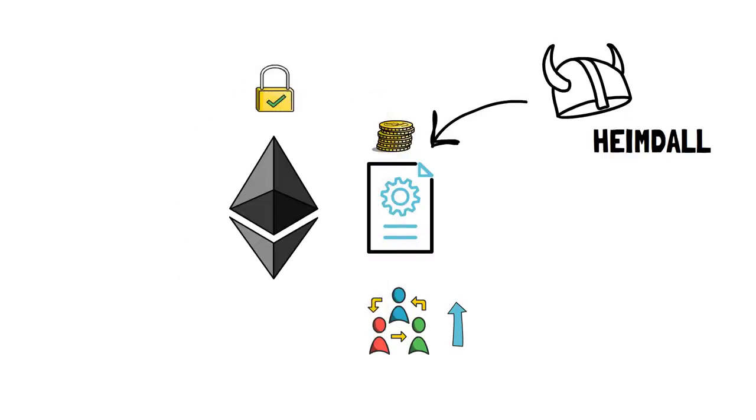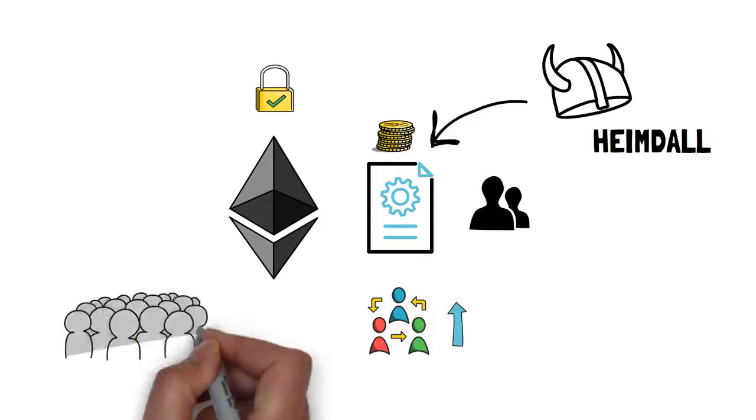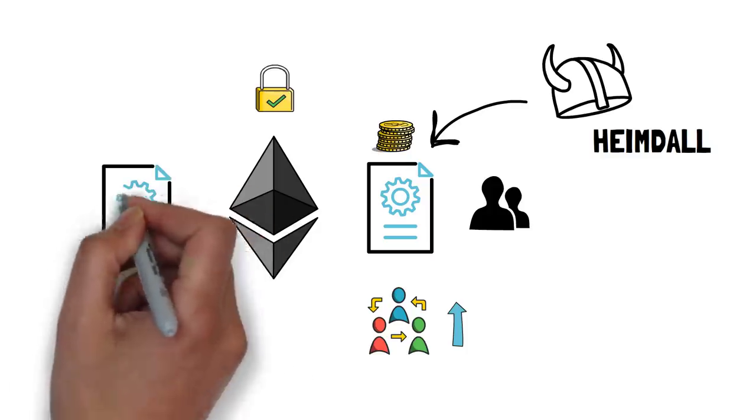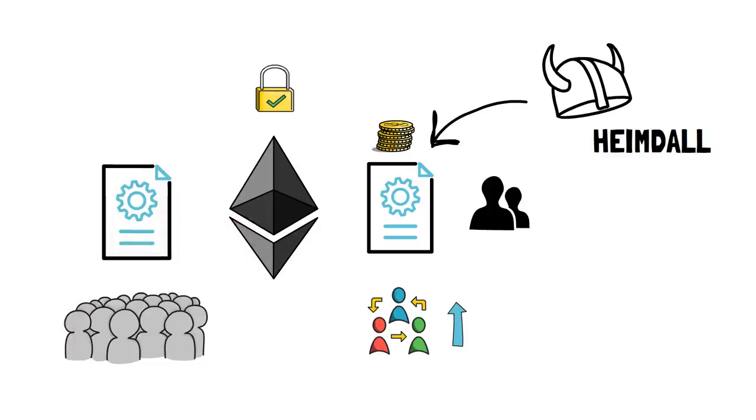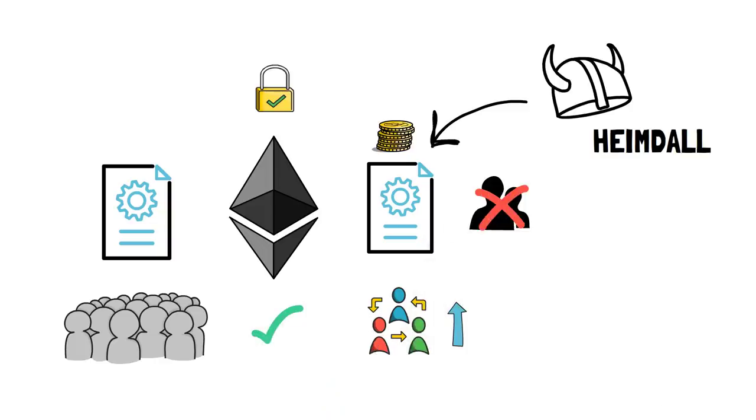Even if a majority of validators collude and start acting maliciously, the community can come together and redeploy the contracts on Ethereum to fork out, for example, slash the malicious validators, and the chain can continue to operate as intended.